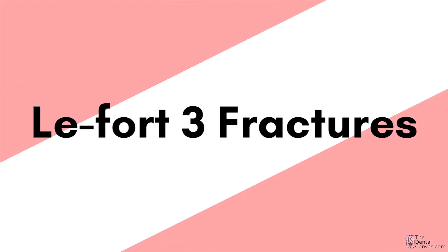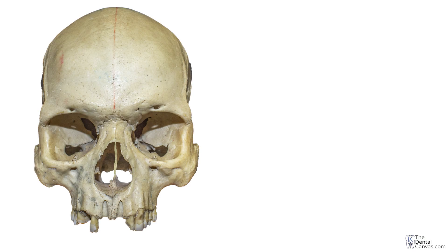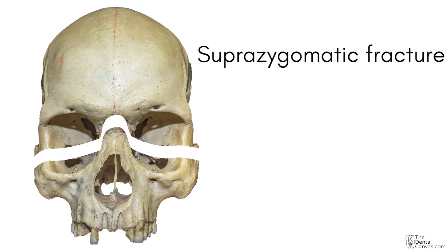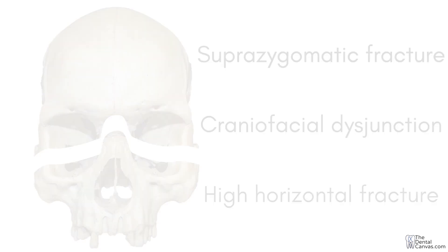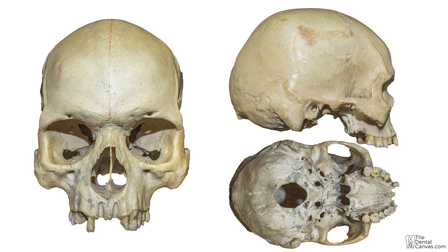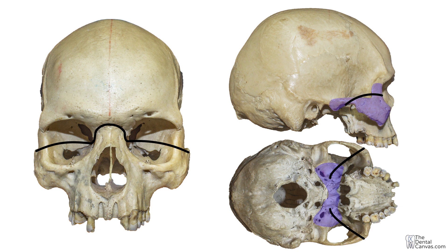Le Fort three fractures, also known as suprazygomatic fracture or craniofacial disjunction or a high horizontal fracture. The fracture line starts from the nasal bridge involving the ethmoid and nasal bones, frontonasal and frontomaxillary sutures, and extends laterally passing through the superior orbital fissure. It then involves the greater wing of sphenoid bones, frontozygomatic sutures and the zygomatic arches, finally terminating at the superior one-third of pterygoid plates.